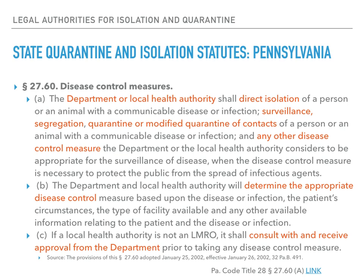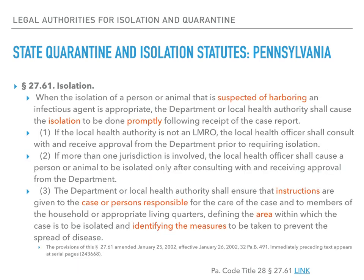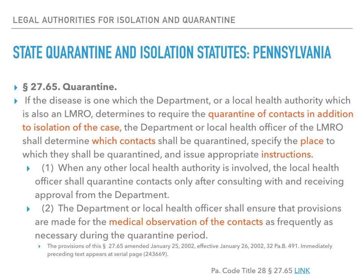This is the full text for disease control measures in Pennsylvania. The wording highlighted in orange reflects that the state or local health authority directs the surveillance, isolation, quarantine, and appropriate control measures for communicable diseases. Note that this particular code also applies to animals. The Pennsylvania code addresses timing at the start of isolation — recommended promptly following the case report — whether individuals should remain isolated, and the provision of instructions to reduce the spread of disease. The last portion specifically addresses quarantine of contacts, specifying where they should be quarantined and authorizing medical observation of contacts as frequently as necessary.